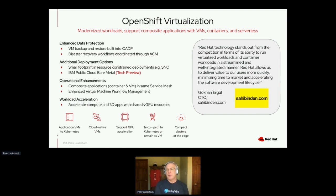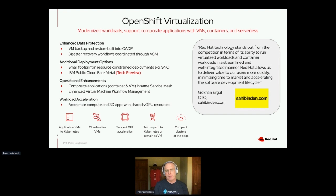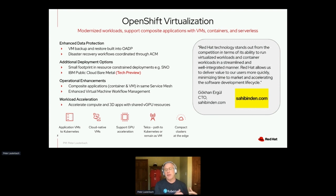A couple of things available in OpenShift Virtualization include the ability to back up and restore virtual machines in that environment as you back up your OpenShift cluster. OpenShift itself has many different deployment options: you can deploy in a large bare metal cluster with racks of servers, in a much smaller footprint like a compact three-node cluster with schedulable masters, or even a single node OpenShift — the latest option. You can run virtual machines and databases on every one of those platforms.